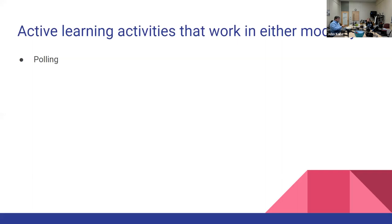The one thing that doesn't work as well is when you do polling as a two-stage process — sort of a think-pair-share — where students think, vote themselves, discuss with other students, then vote again. That's easy if everyone is remote (break into breakout rooms) or everyone is in person. You can have in-person students talk to each other, work through the problem, and vote again; remote students can go into breakout rooms, discuss it, and come back. You just have to be careful to give them enough time to discuss remotely.